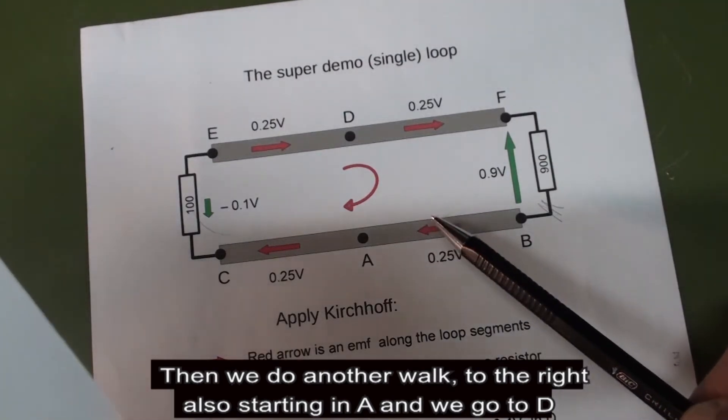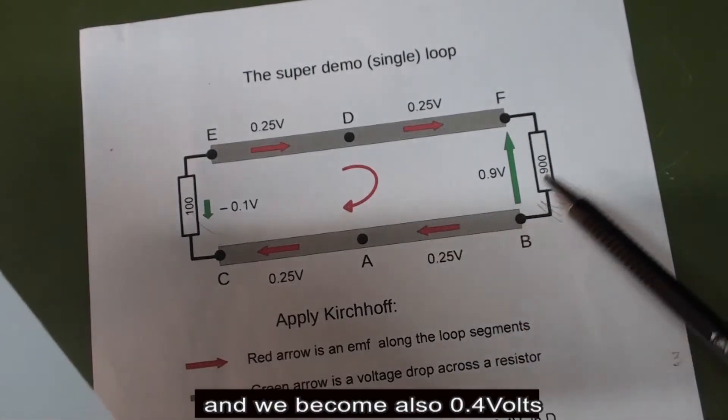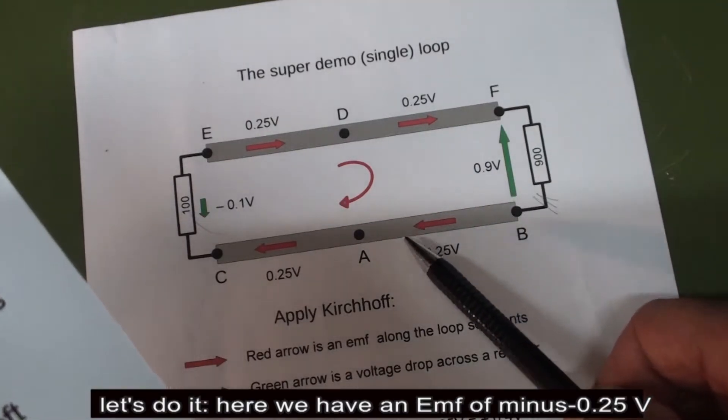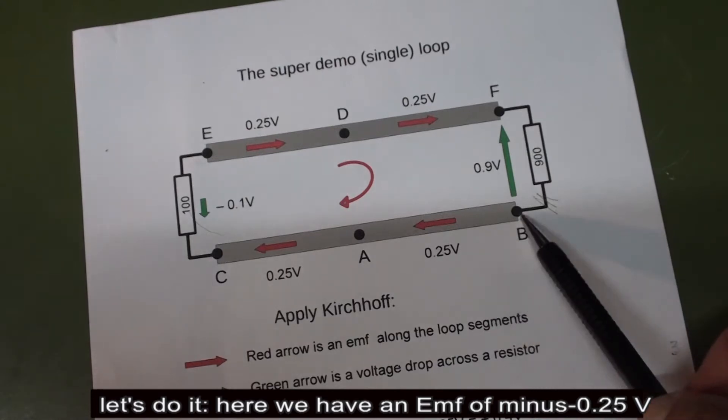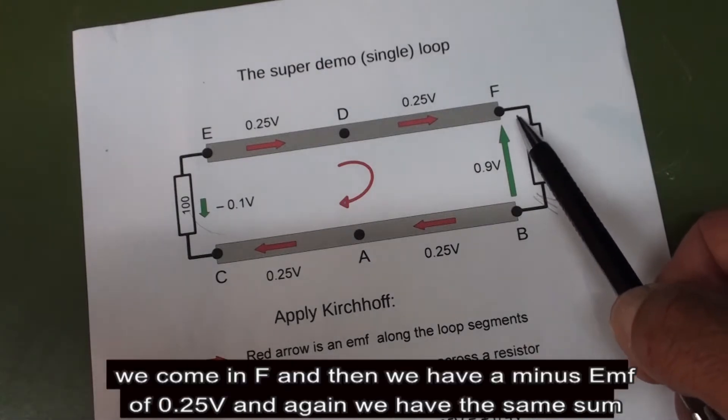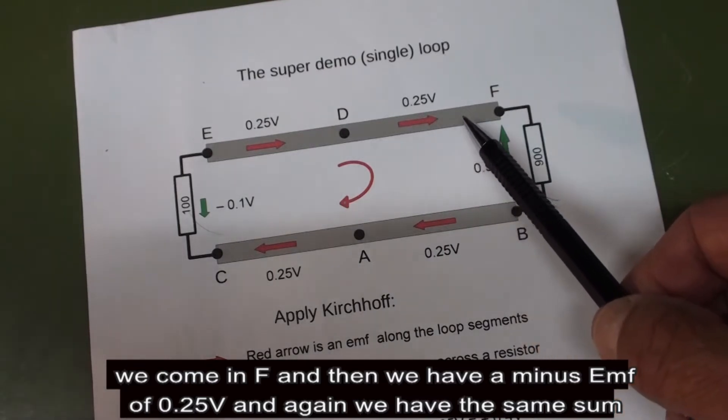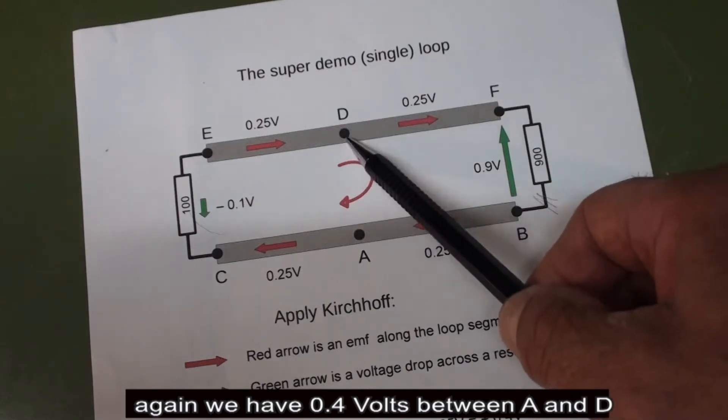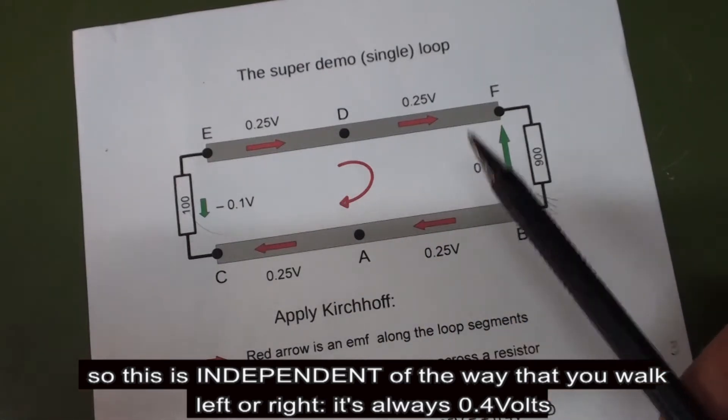And then we do another walk. We walk to the right starting in A, and we go to D. We get also 0.4 volts. Here we have an EMF of minus 0.25, then a drop of plus 0.9, we get to F, then an EMF of minus 0.25, and again we have the same sum. Again 0.4 volts between A and D. So this is independent of the way that you walk, left or right. It's always 0.4 volts.